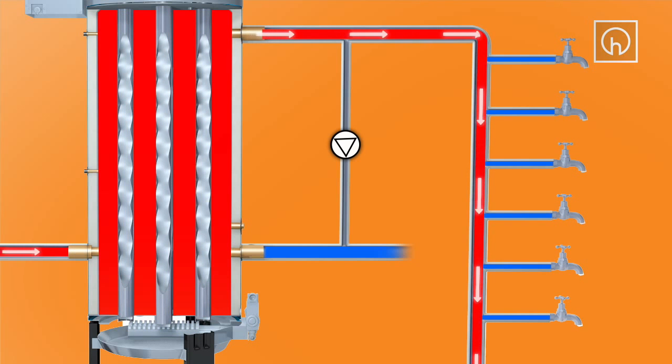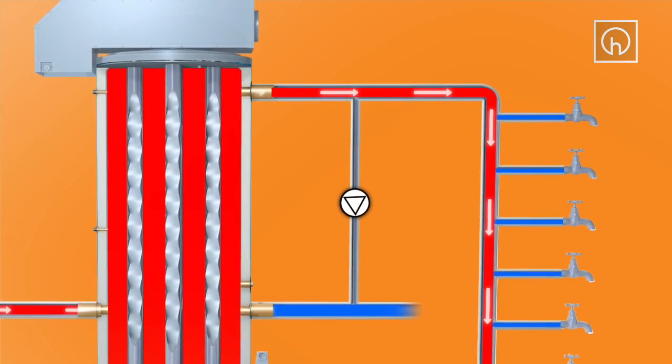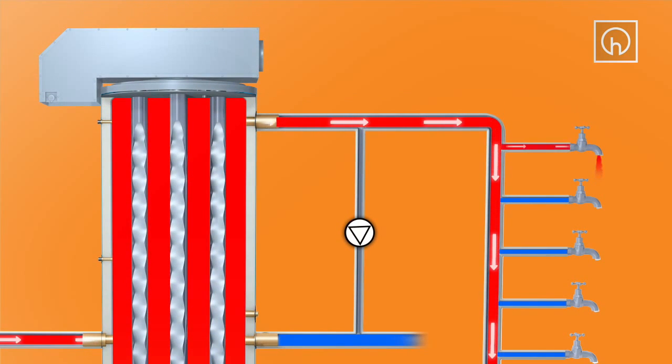Ideally, this should happen as the building occupants need the hot water supply. Once the users draw off hot water, the system is automatically replenished with fresh cold water for the heating cycle to continue.